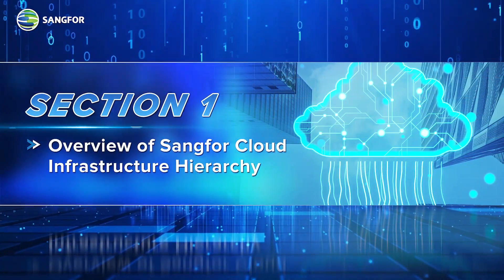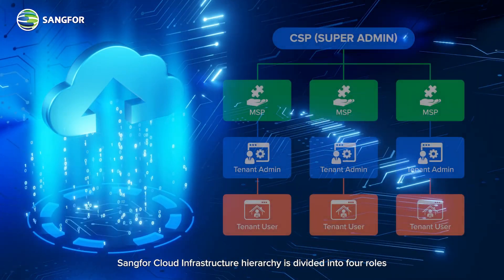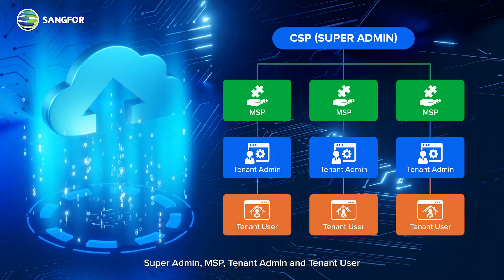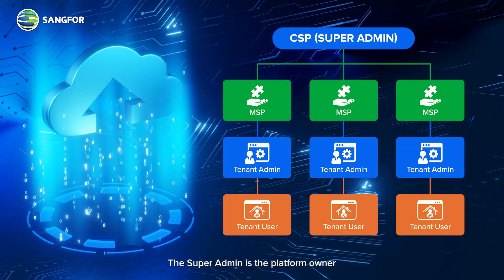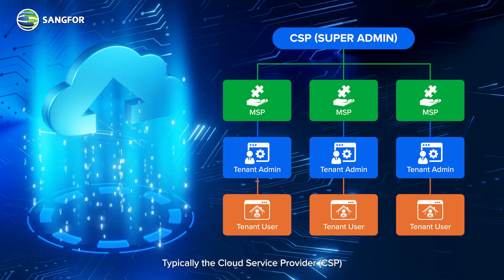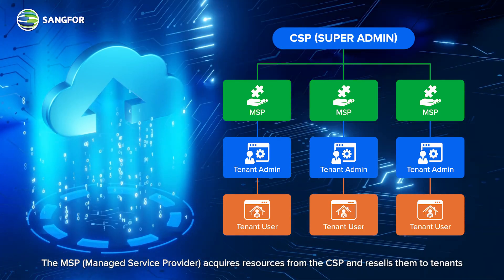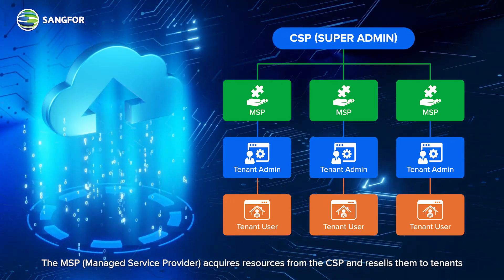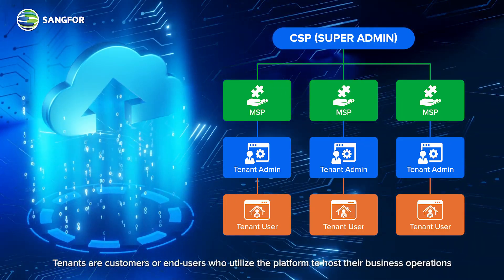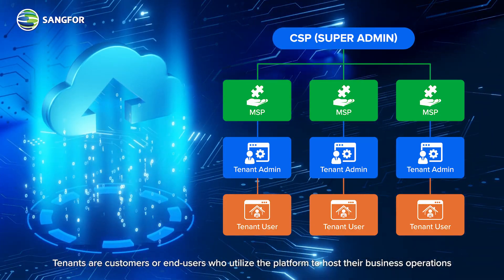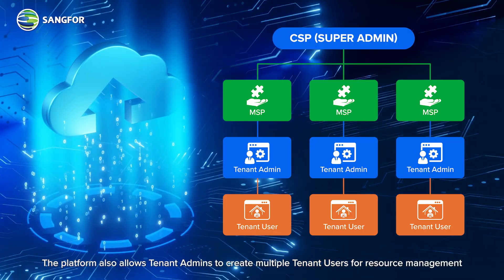Section 1: Overview of Sang4 Cloud Infrastructure Hierarchy. The hierarchy is divided into four roles: Super Admin, MSP, tenant admin, and tenant user. The Super Admin is the platform owner, typically the cloud service provider (CSP). The MSP, or managed service provider, acquires resources from the CSP and resells them to tenants, often acting as the CSP's partner. Tenants are customers or end users who utilize the platform to host their business operations. The platform also allows tenant admins to create multiple tenant users for resource management.